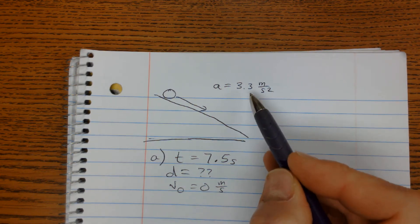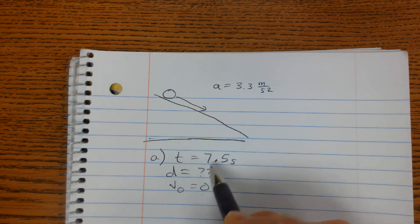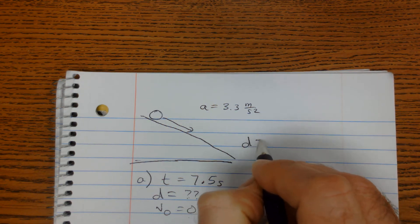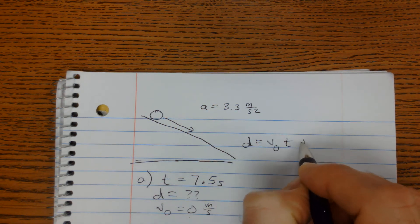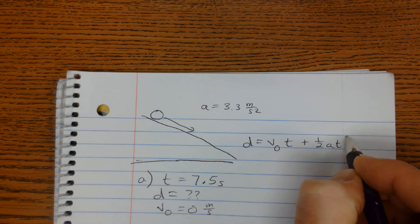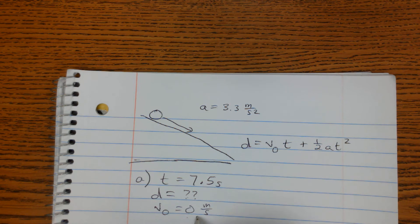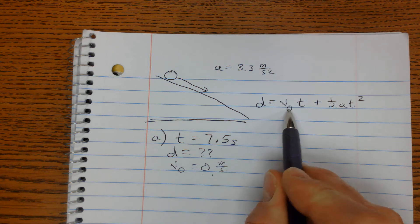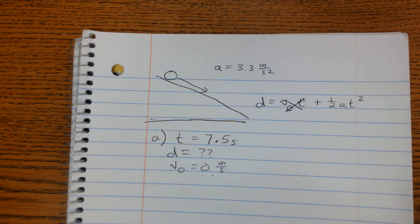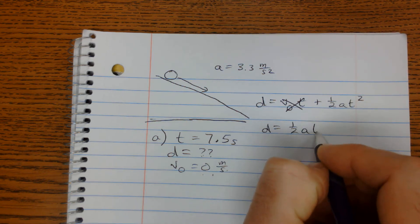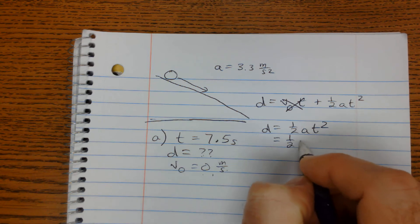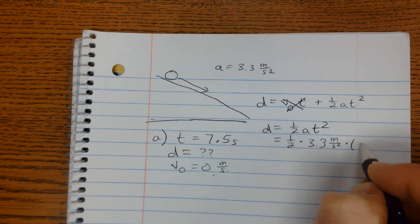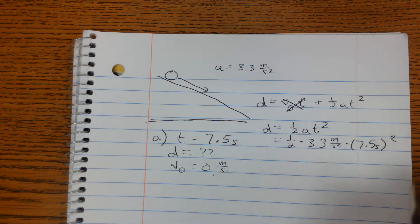So now we have an acceleration, an initial velocity, a time, and a distance. So what we can do now is we can say that the distance is equal to the initial velocity times the time plus ½ at squared. Because our initial velocity is 0 meters per second, that means when we put the initial velocity of 0 times time, that's going to go away, and we're going to be just left with distance equals ½ at squared. So we'll have ½ times 3.3 meters per second squared times 7.5 seconds squared.